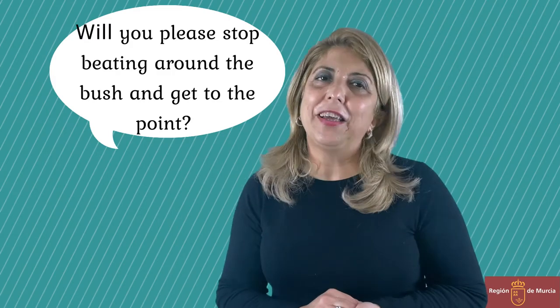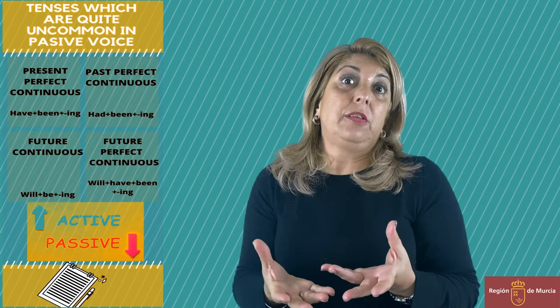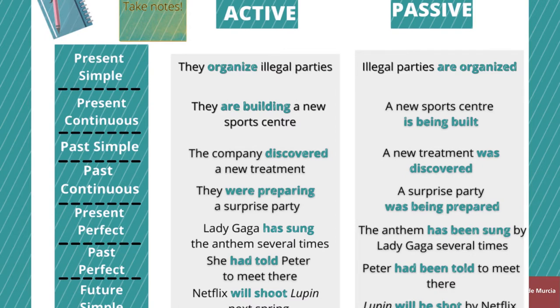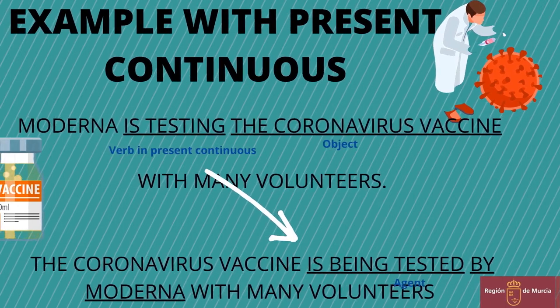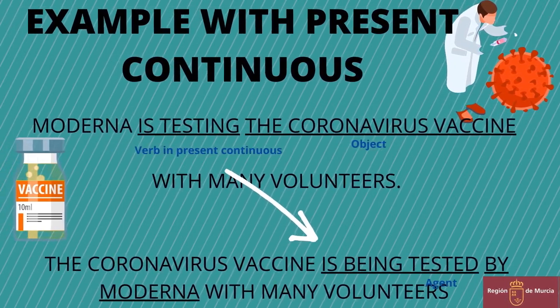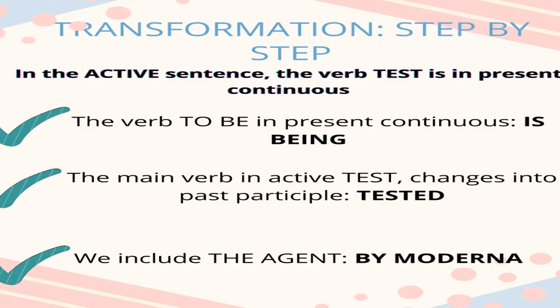Let's share a few examples together. As nearly all tenses can be used in passive structure, have a look at the ones in the chart. One example with present continuous: 'Moderna is testing the coronavirus vaccine with many volunteers' becomes 'The coronavirus vaccine is being tested by Moderna with many volunteers.' In the active sentence, the verb 'test' is in present continuous. So to transform it into the passive, use the verb 'to be' in present continuous — 'is being' — and the main verb 'test' changes into past participle: 'tested.' We include the agent 'by Moderna' because the subject refers to a biotechnology company and there are others.